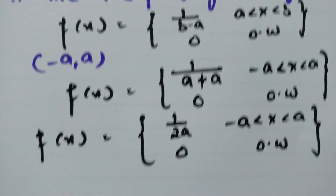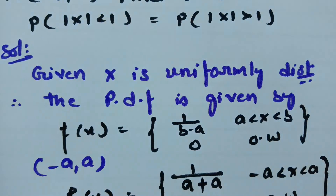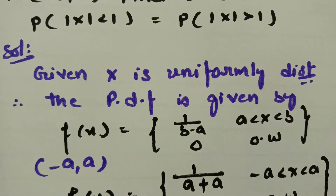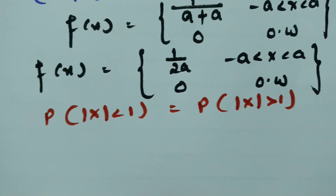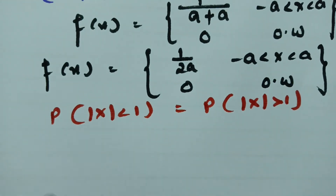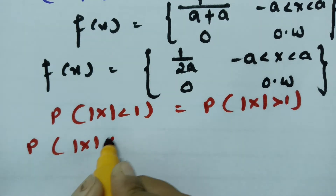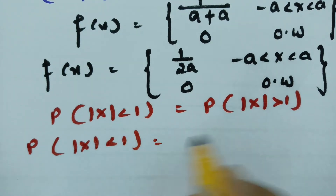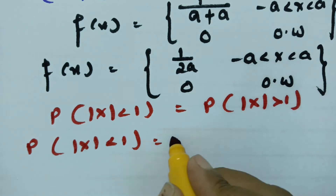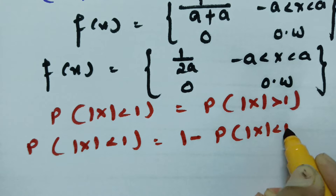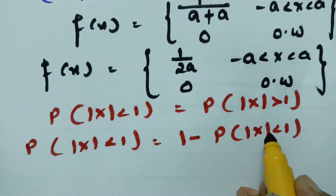From the question, it is given that P(|x| < 1) = P(|x| > 1). To find the value of 'a', note that P(|x| > 1) can be written as 1 - P(|x| < 1).